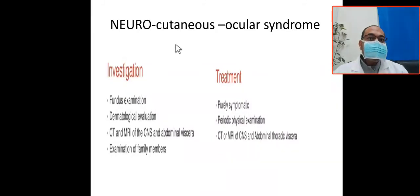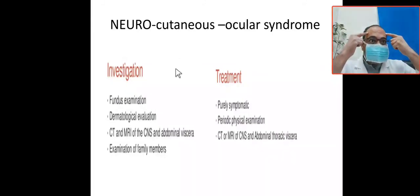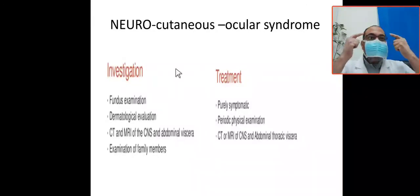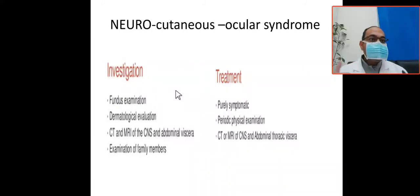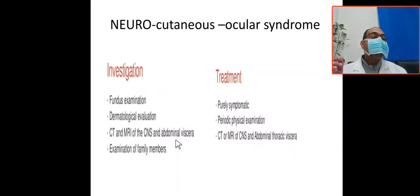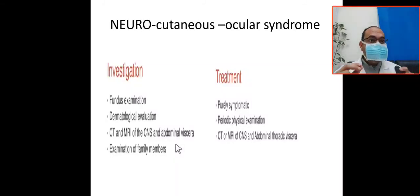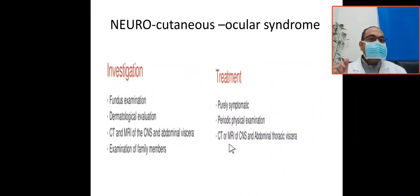For investigations: CNS imaging studies are needed to rule out cortical tubercles. Eye fundus examination and slit lamp examination should be performed. Refer to a dermatologist for the ash leaf spots. CT scan and neurological assessment are required. Family examination is essential because this condition is autosomal dominant with variable penetrance.